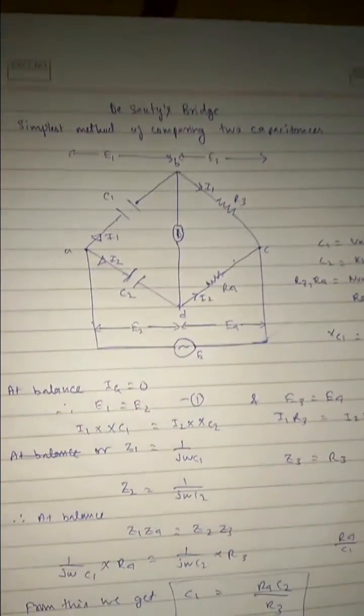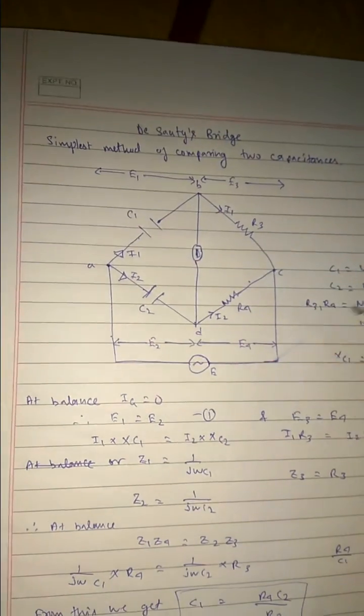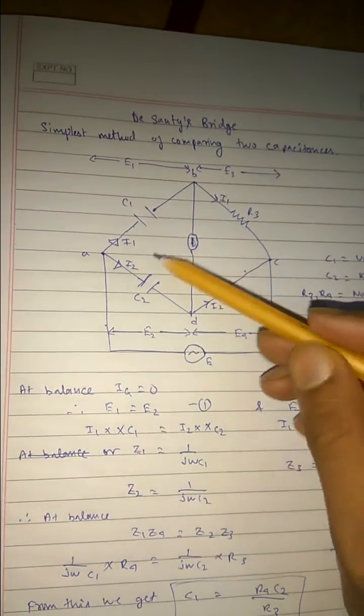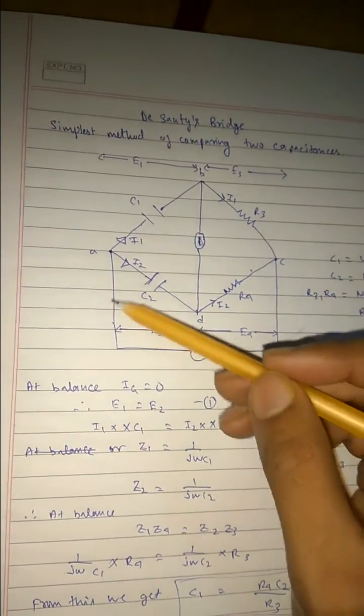So let's have a look at the more neat diagram. So this is our actual De Sauty's bridge diagram. So what happens, the current goes from here.